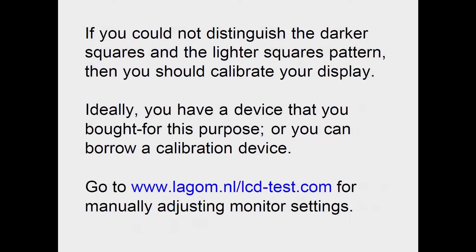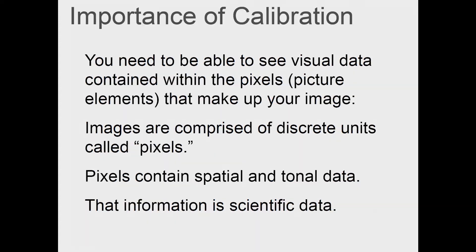The website is www.lagom.nl. When you go to this site, if you can't distinguish the darker squares and the lighter square patterns, then it would be imperative to calibrate your display with a calibration device such as one available from Datacolor. If you don't have that device and you have access to settings on your monitor, you can use the settings to see the lightest and darkest squares and then keep your monitor at those settings. It's really important to see the visual data contained within the pixels that make up your image.